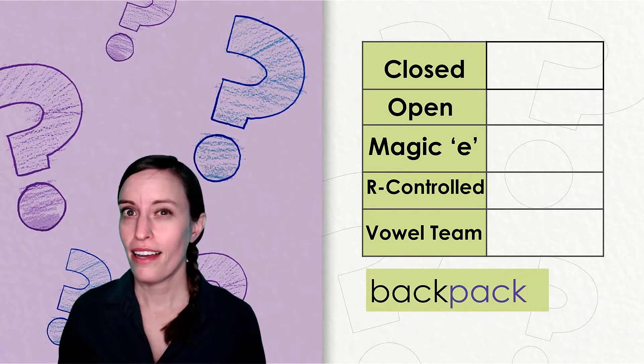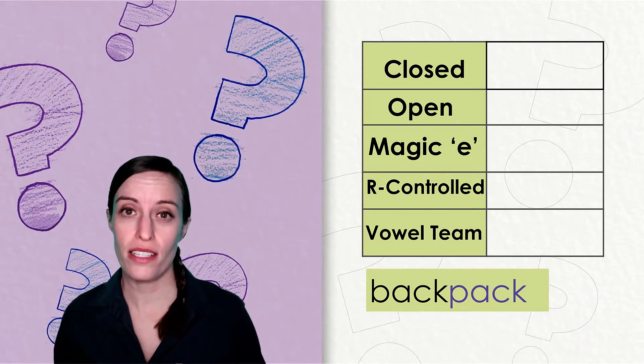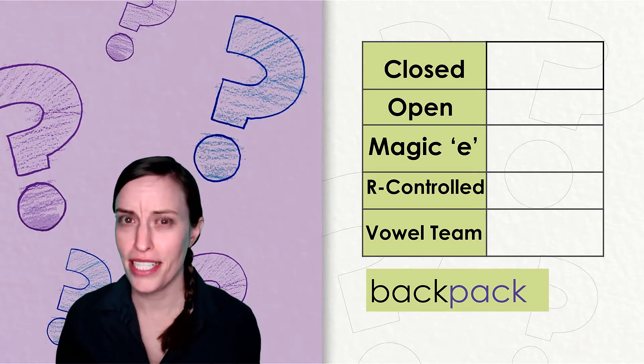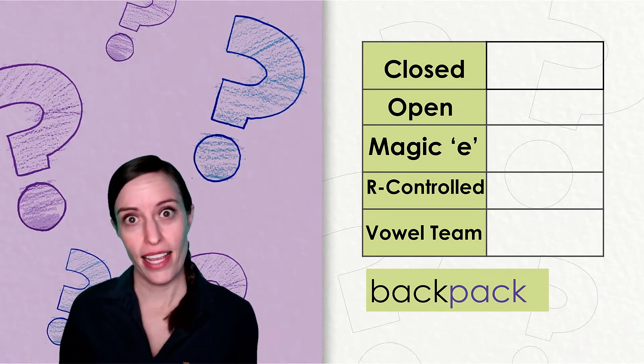Our first word is backpack. This word has two syllables: back-pack. What kind of syllables are back and pack? Both back and pack are closed syllables.